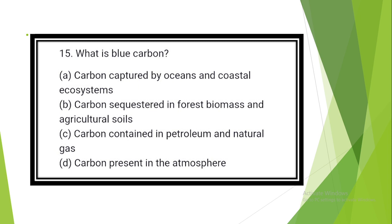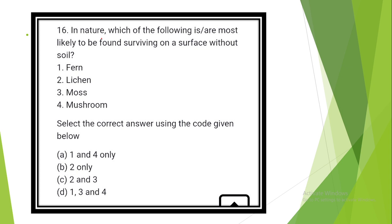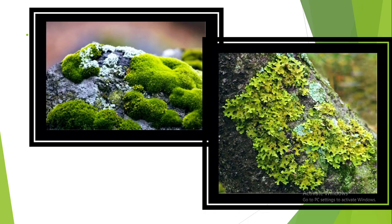Question 15. What is blue carbon? The answer is option A: Carbon captured by oceans and coastal ecosystems. Question 16. In nature, which of the following is most likely to be found surviving on surface without soil? The answer is option C: Lichen and moss. These are the images of lichen and moss.